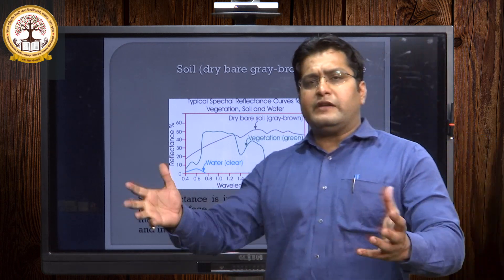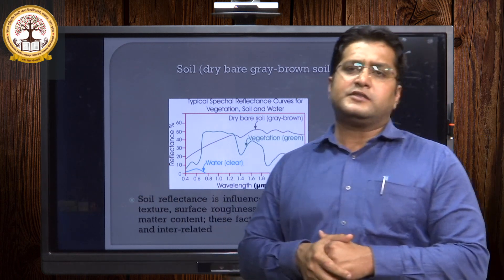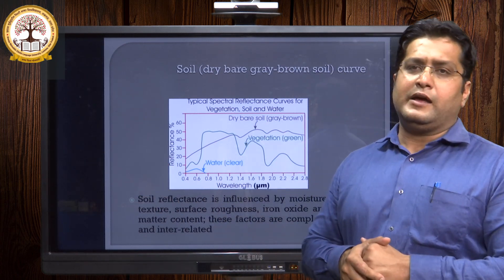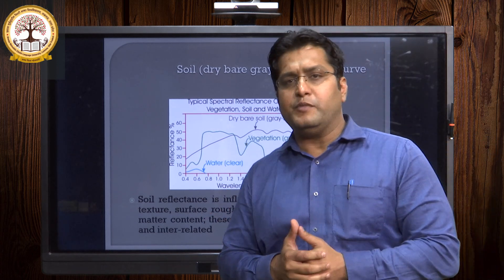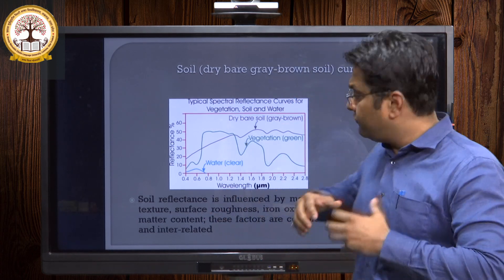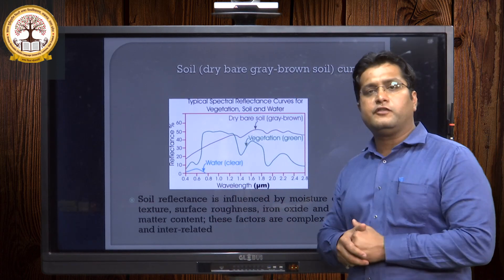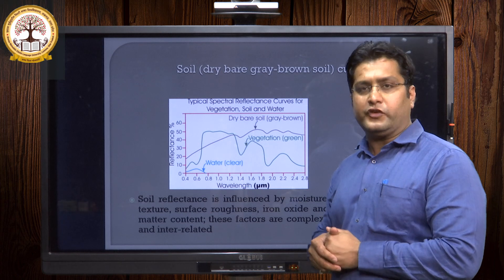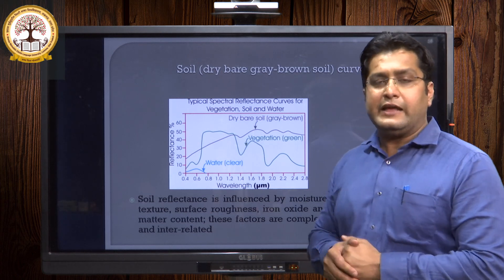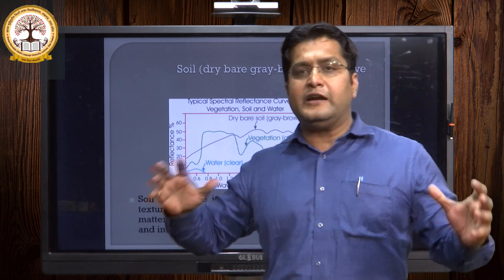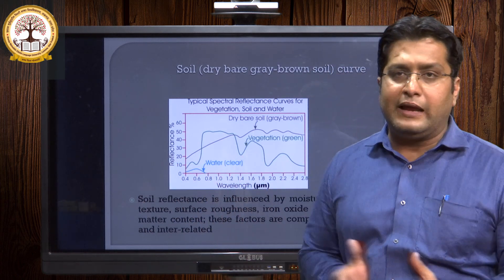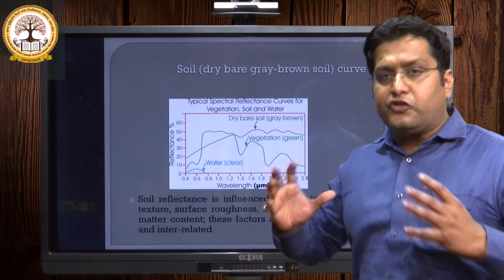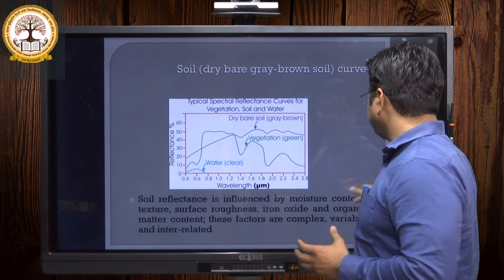Various ground-based methods are available, such as spectrometers and radiometers, through which we can easily draw spectral reflectance curves. This is very helpful for identifying the health and characteristics of the soil.